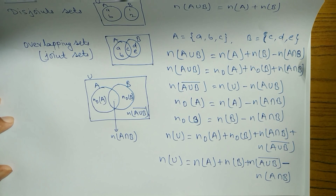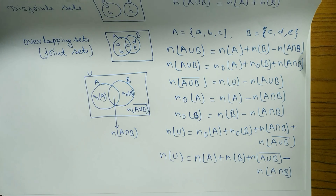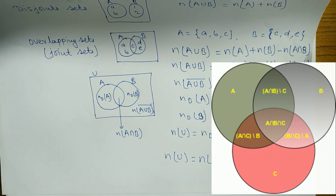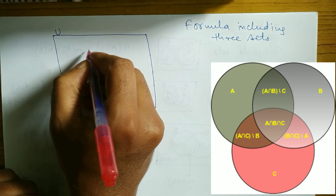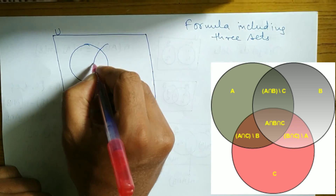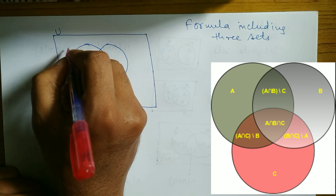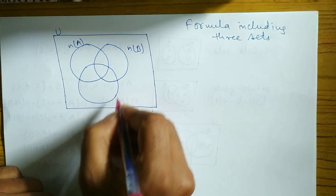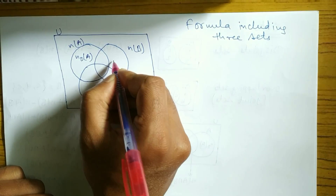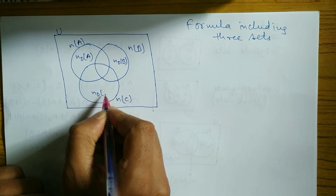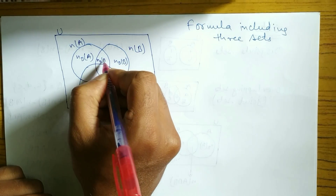These formulas are very important. Now, if there are three sets, here is the formula for three sets. Let me draw a three-set diagram. This one is A, this one is B, and this one is C. This part is known as n(only A), this part is n(only B), and this part is n(only C).